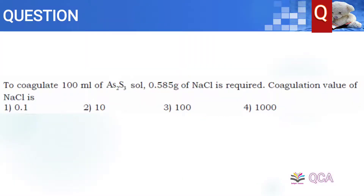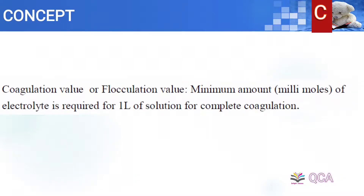To coagulate 100 ml of arsenic sulphide solution, 0.585 grams of NaCl is required. The coagulation value of NaCl is to be found. Coagulation value means the minimum amount of electrolyte required in millimoles for 1 liter of solution for complete coagulation.